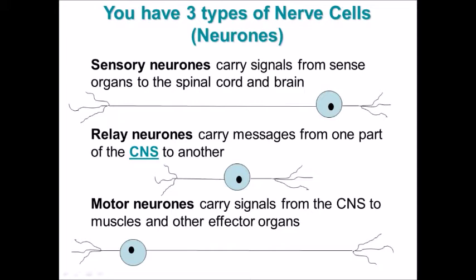The second is a relay neuron which carries messages from one bit of your central nervous system to another. This is usually shown in diagrams on a spinal cord.